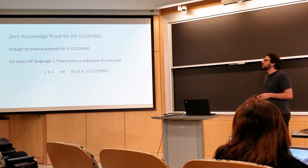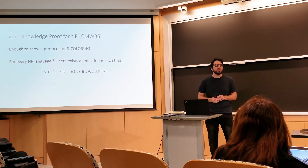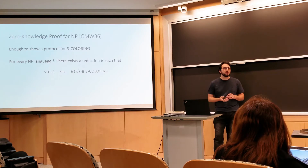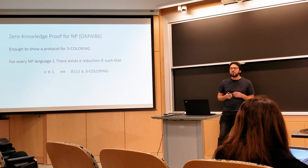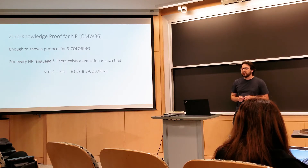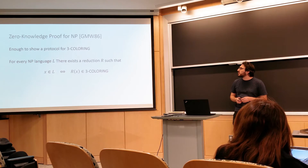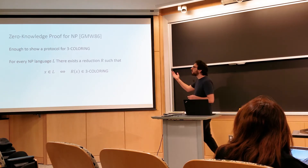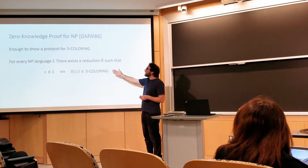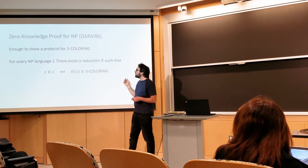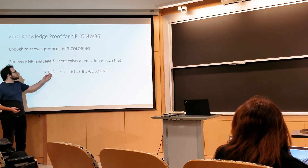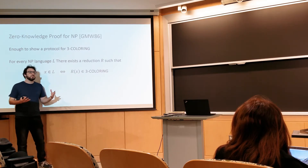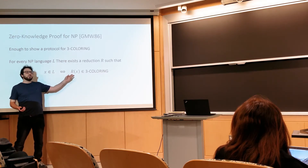Today we're going to construct zero-knowledge protocols for all of NP. You mentioned the protocol for quadratic residuosity — a specific, non-NP-complete language — and started talking about a protocol for the graph 3-coloring language, which is NP-complete. We'll go through the full details. Since 3-coloring is NP-complete, for every other language in NP there is a reduction from that language to 3-coloring. For every language L, there is a reduction R that takes any instance and translates it into a graph, such that x ∈ L if and only if R(x) is 3-colorable.